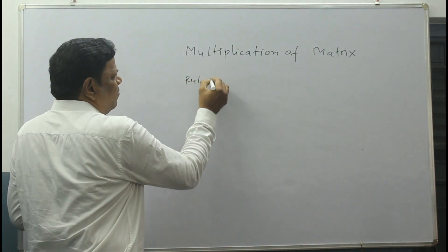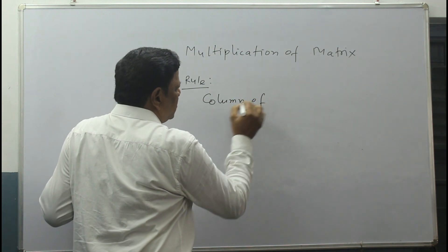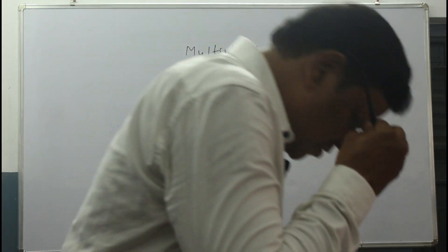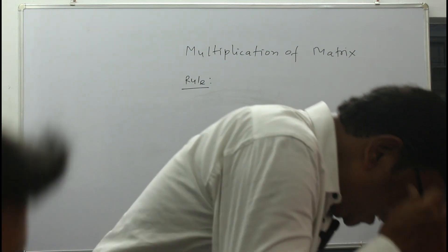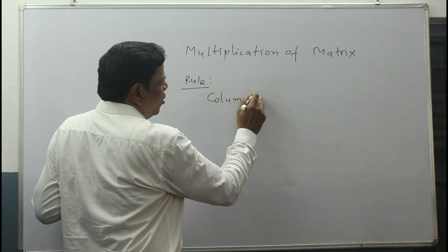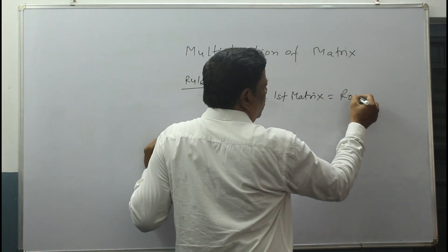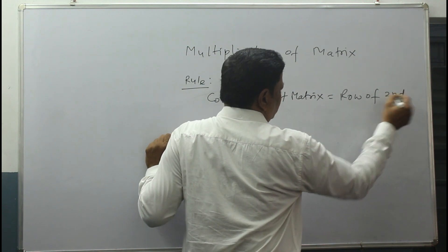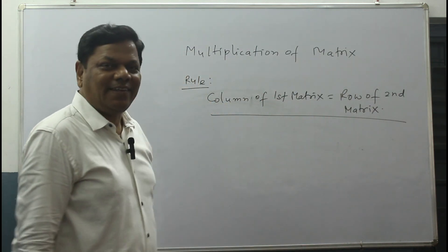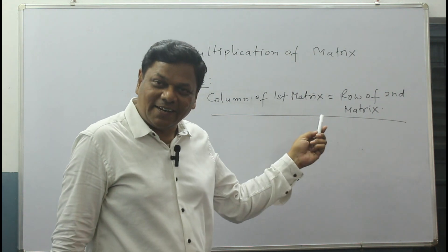Multiplication rule — very important. Column of first matrix must be equal to row of second matrix. If this rule is satisfied, multiplication is possible.